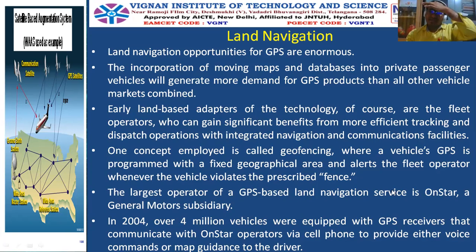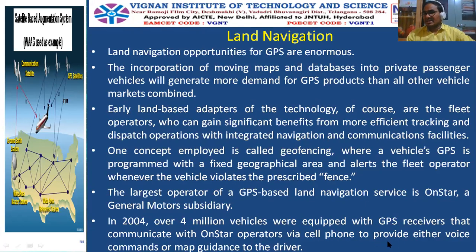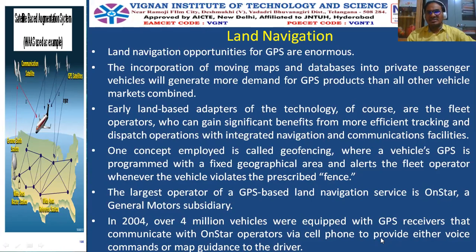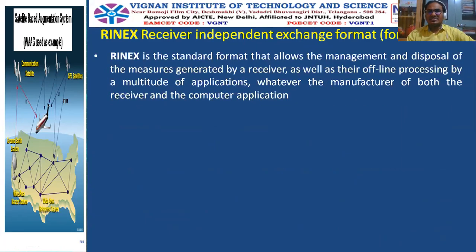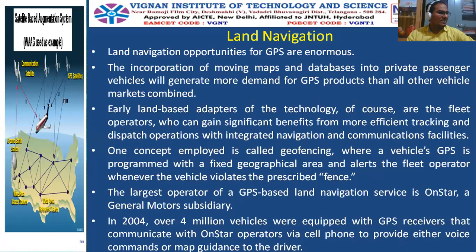The largest operator of a GPS-based land navigation service is OnStar, a General Motors subsidiary. In 2004, over 4 million vehicles were equipped with GPS receivers that communicate with OnStar operators via cell phone to provide either voice commands or map guidance to the driver. These all come under the intelligent transportation system.